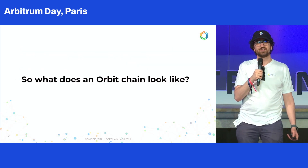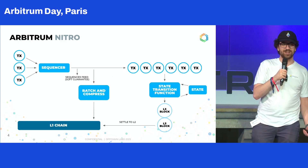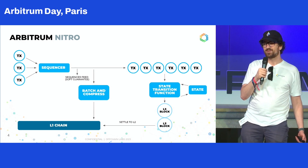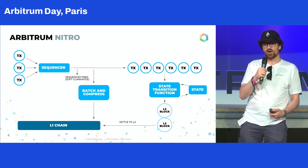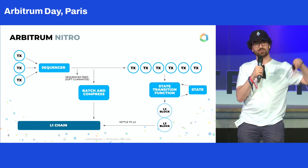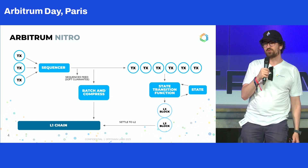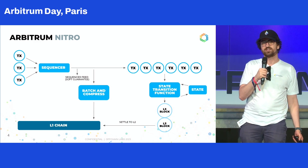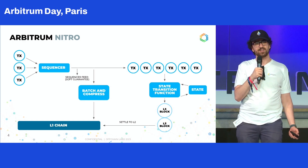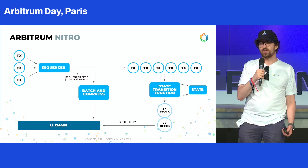So, what does an Orbit chain actually look like? I'm not going to go into all the details here, but the cool part is basically, to describe what an Orbit chain looks like, I just took the diagram I used to describe what Arbitrum One looks like, and I changed where it says L2 to say L3, and where it says L1 to say L2. And that's how cool Orbit is, because it's just reusing the same battle-tested tech that has the experience, security, and usability from Arbitrum One to deploy other chains.